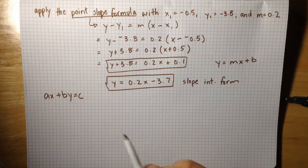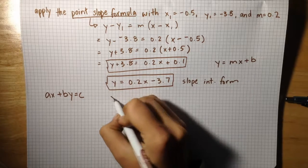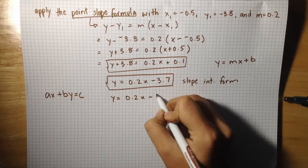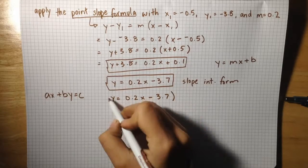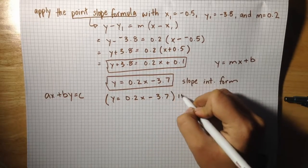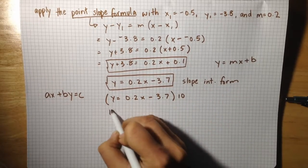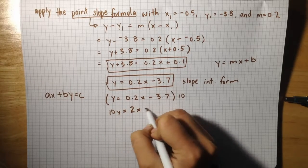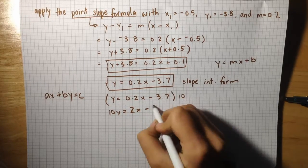But first, I'm going to multiply this equation by 10 to get rid of the decimals. If I multiply the whole equation by 10, that gives me 10y. 0.2 times 10 is 2x minus 3.7 times 10 is 37.